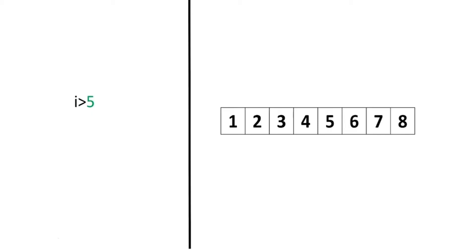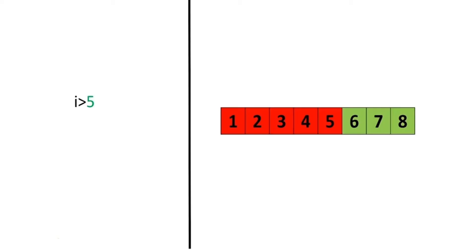Consider the following equality comparison operator. If the value of the left operand, in this case the variable i, is greater than the value of the right operand, in this case 5, the condition becomes true, or else we get a false. Let's display some values for i on the left. Let's see the values greater than 5 in green, and the rest in red. If we set i equal to 6, we see that 6 is larger than 5, and as a result, we get a true.